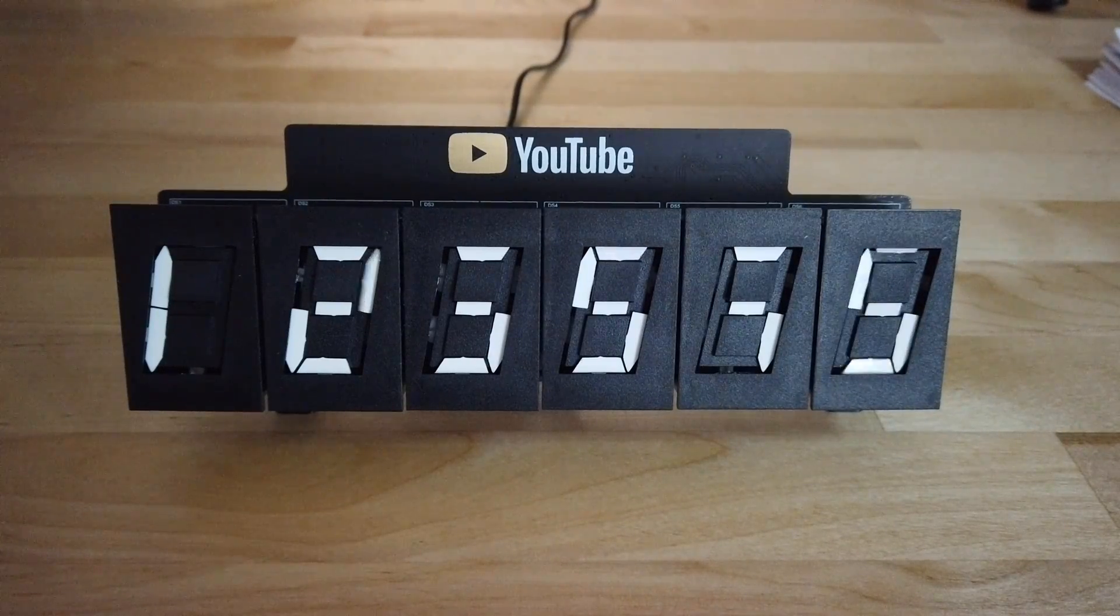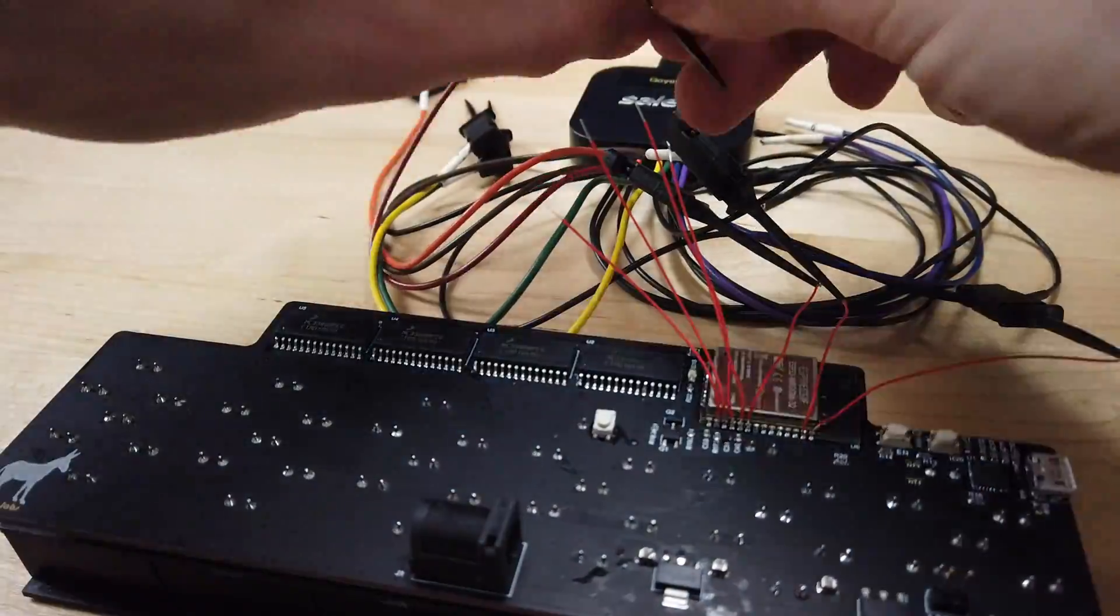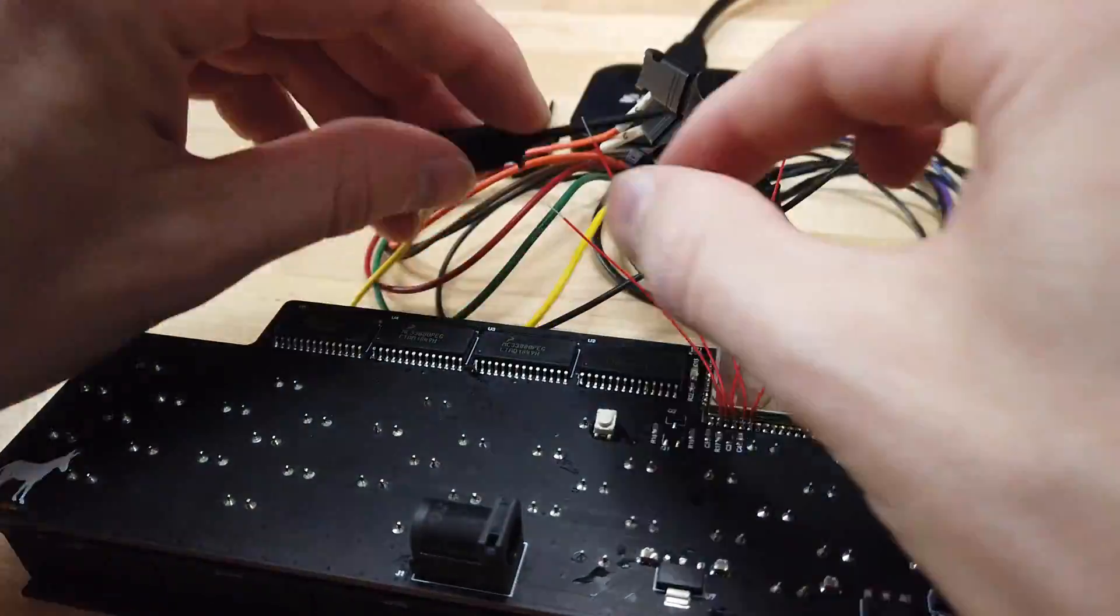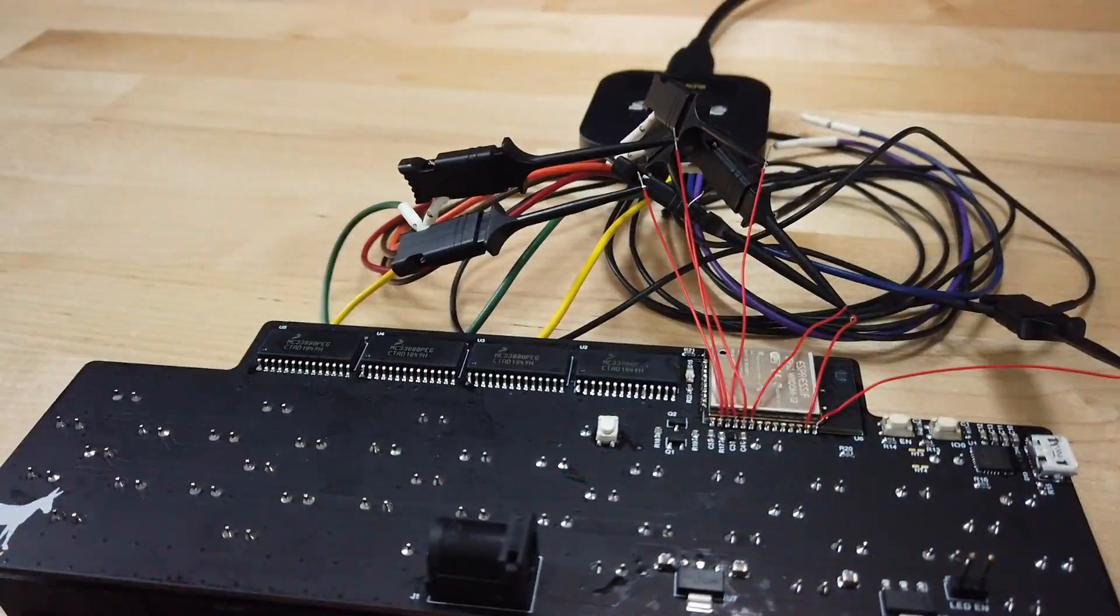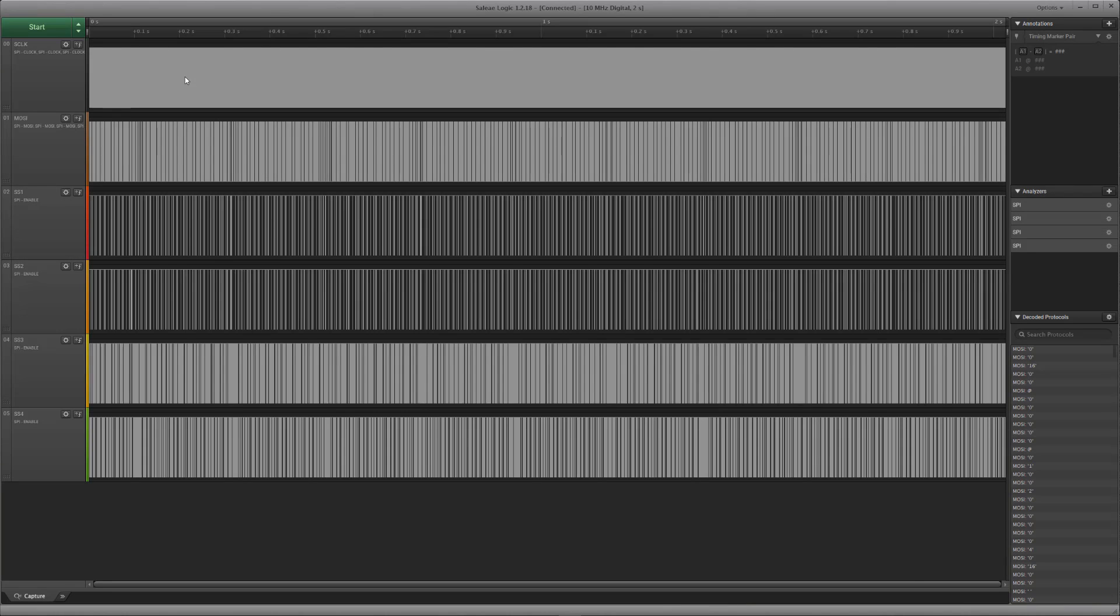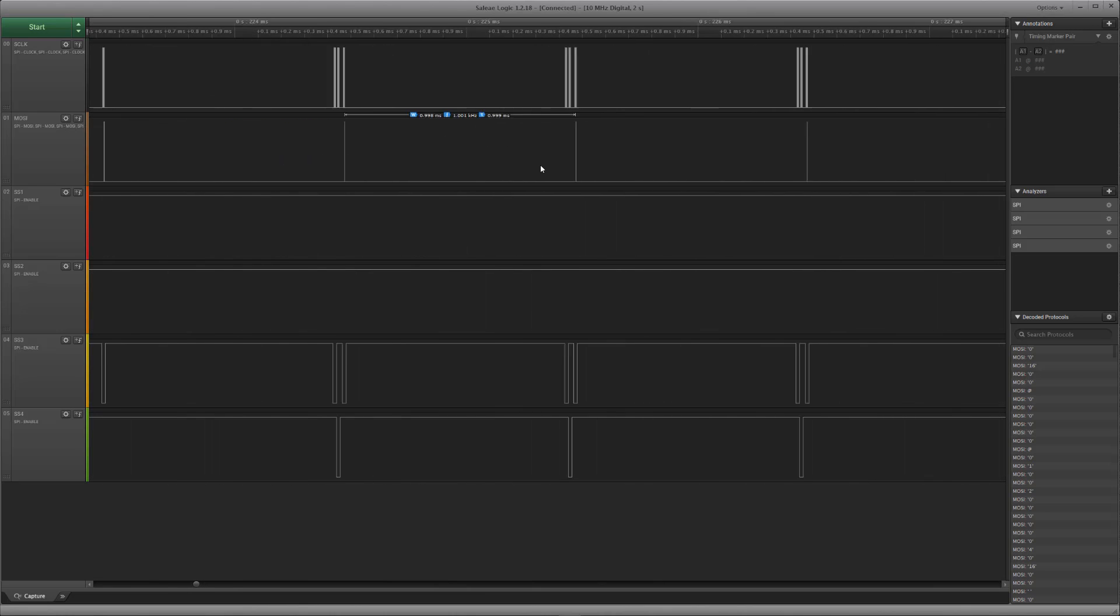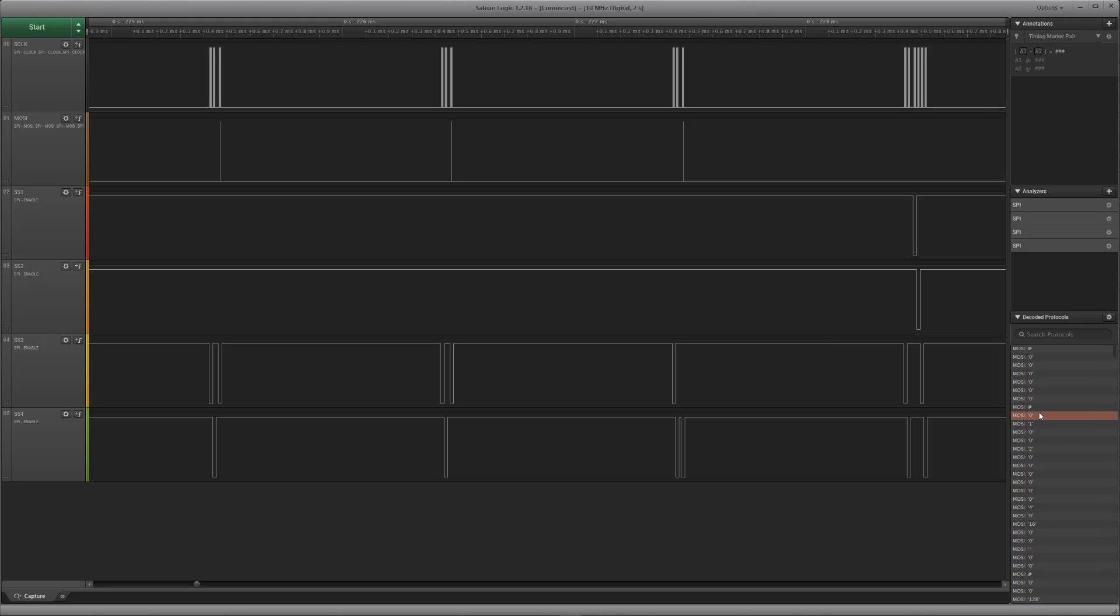It seems that some of the displays are having an influence on each other. The first step is to figure out if this is a hardware or a software issue. A good place to start is with a logic analyzer to see if we are physically getting the output that we would expect. After looking through the data capture, it seems that the software is doing exactly what it should be. This means that the issue is likely within the hardware.